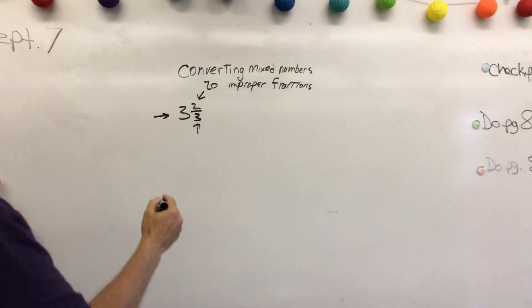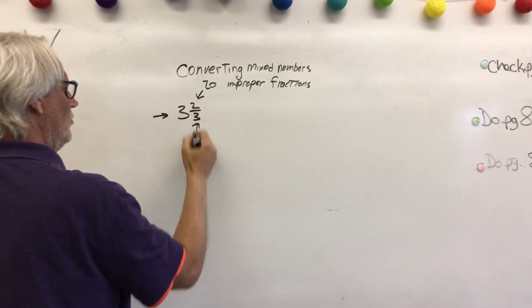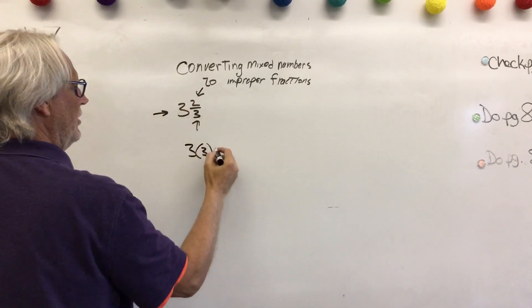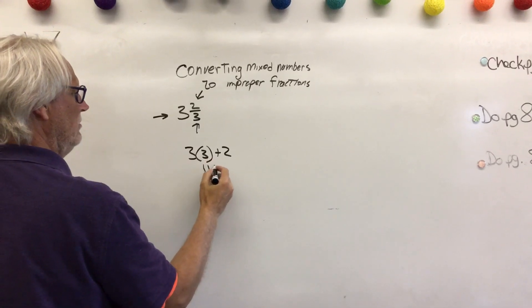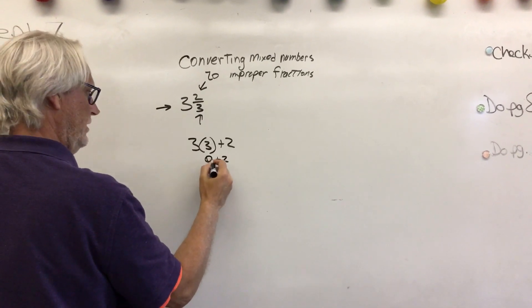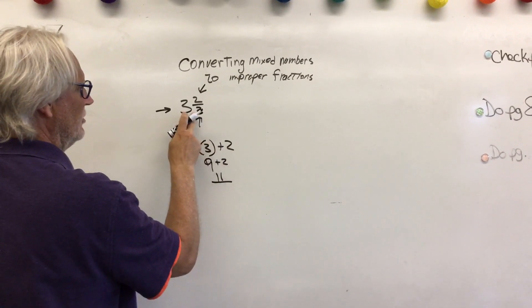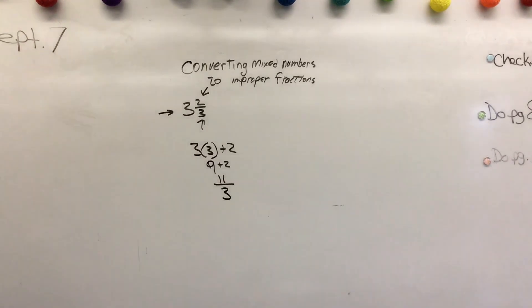So what I'm going to do is multiply the denominator by the whole number. So 3 times 3, I'm going to add the numerator, plus 2. So 3 times 3 is 9, plus 2 is 11, and then the denominator stays the same, so it becomes 11 over 3.